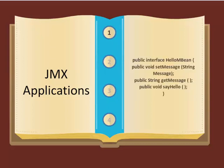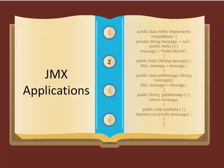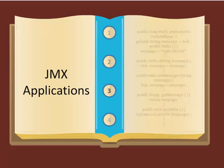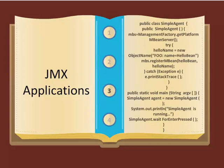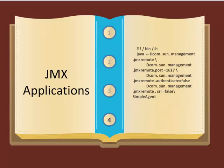Let's now see an example of a JMX application. First, you need to create a Java MBean interface named Hello MBean. Next, you require a class to implement the JMX MBean interface. Next, you create a Java class named SimpleAgent that includes the main method and starts up the JMX service application. And finally, here is a Unix shell script named Run.sh to run the sample application.